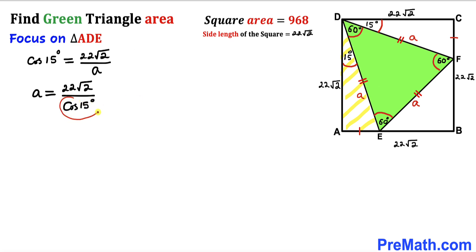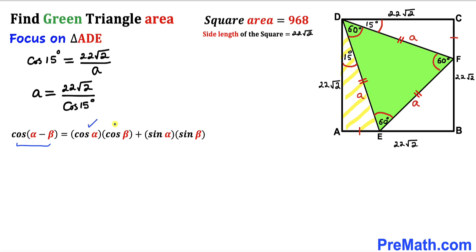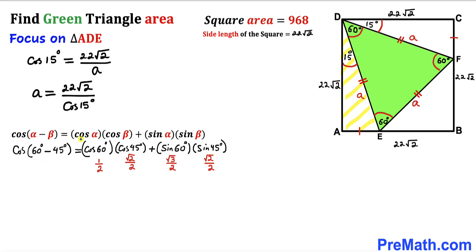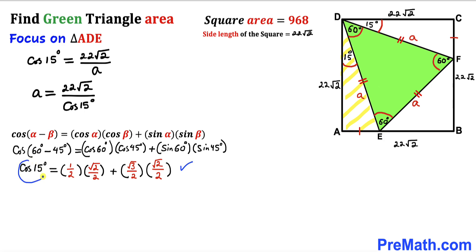Now let's find the exact value of cosine of 15 degrees using the angle difference property: cosine of (α − β) equals cosine α times cosine β plus sine α times sine β. Setting α = 60 degrees and β = 45 degrees gives us 15 degrees. We know cosine 60° = 1/2, cosine 45° = √2/2, sin 60° = √3/2, and sin 45° = √2/2.